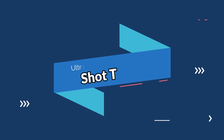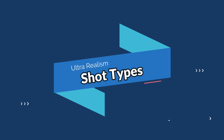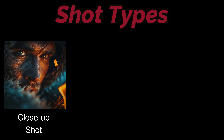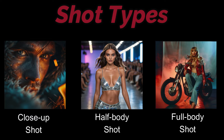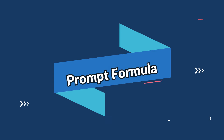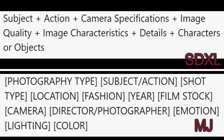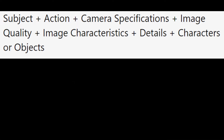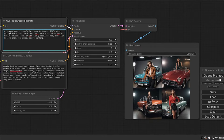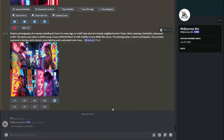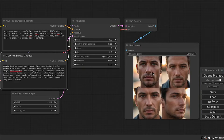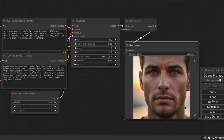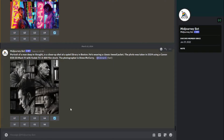First let's discuss shot types. We have three categories: close-up shot, half-body shot, and full-body shot. The prompt formula will be different for each AI tool — Stable Diffusion and MidJourney use different prompt structures — but the subject, lighting, and every detail will be the same. The prompt will be tweaked depending on which tool we're generating from.